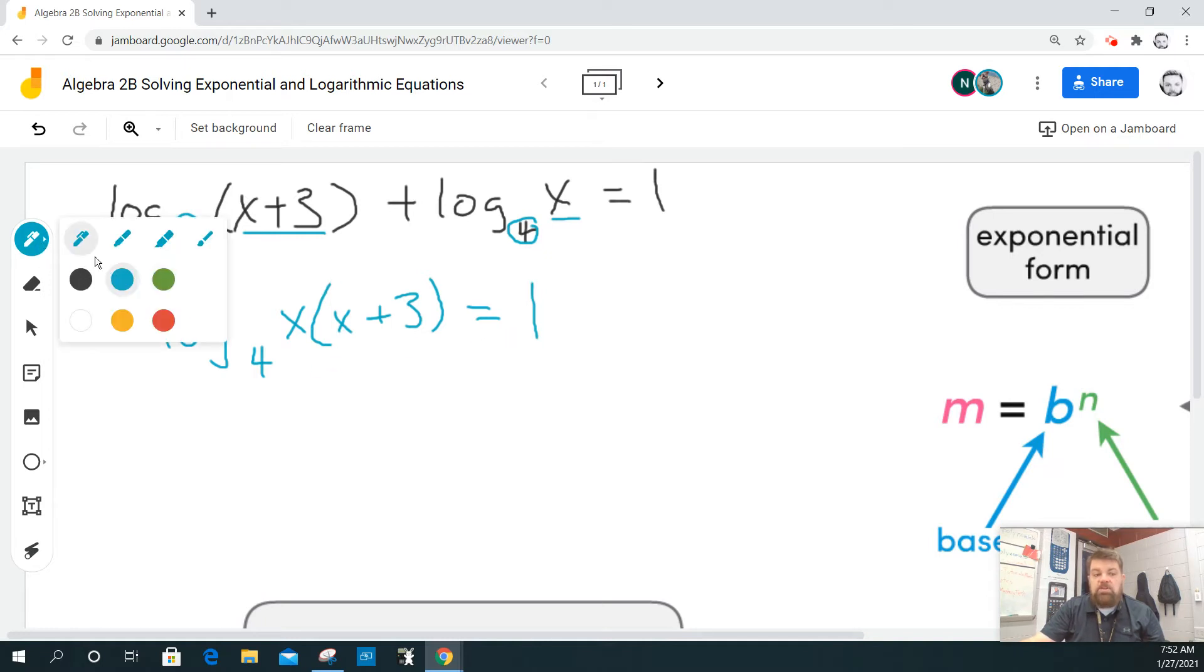And then if I distribute this through the parentheses, I get that this is the log base 4 of x squared plus 3, and that whole thing equals 1.